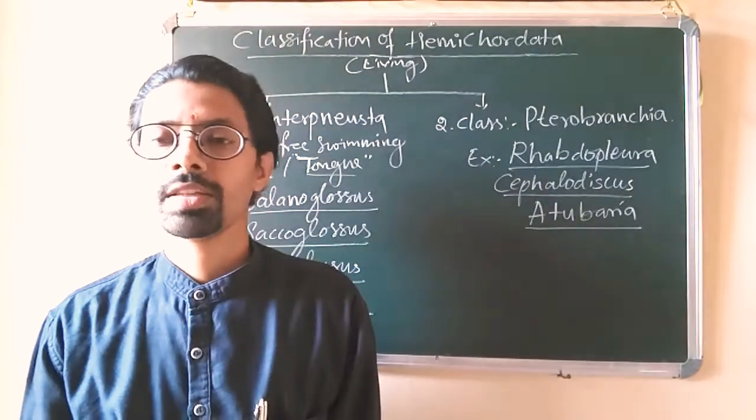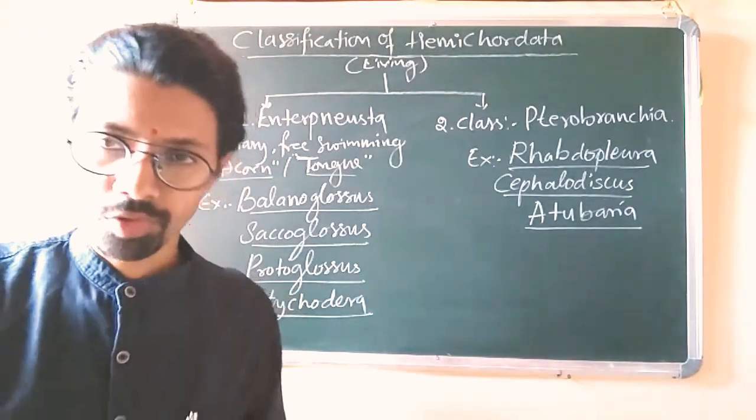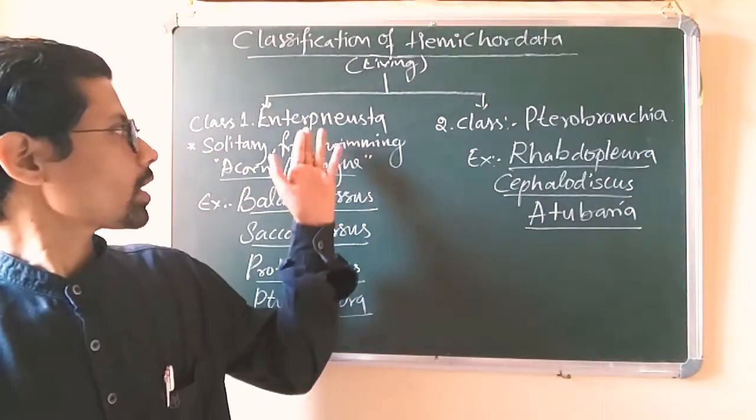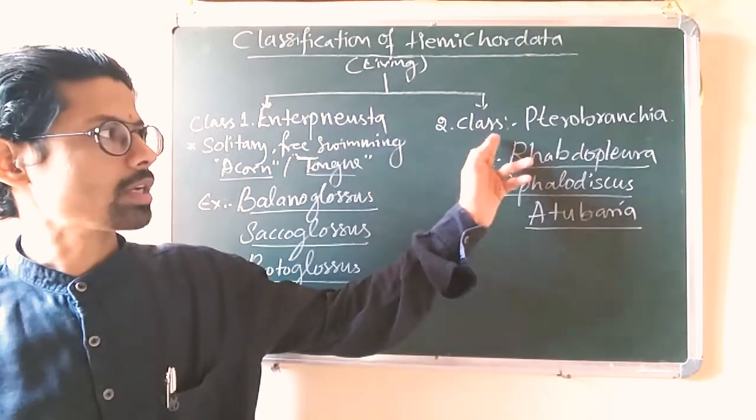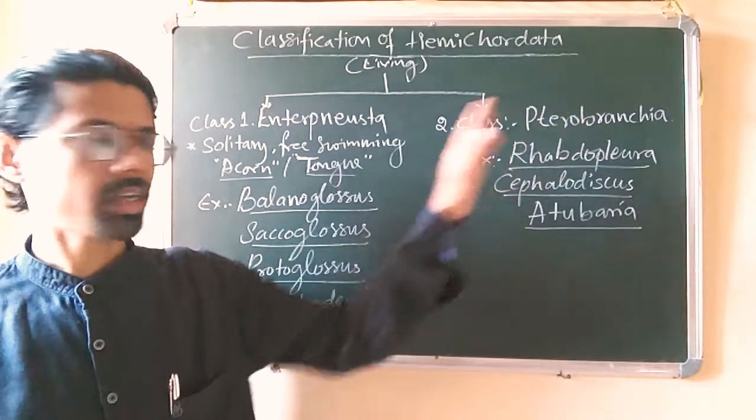Hemichordata is classified into two living classes, which I have written on the board here. The first one is Enteropneusta and the second one is Pterobranchia.